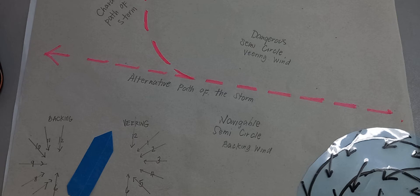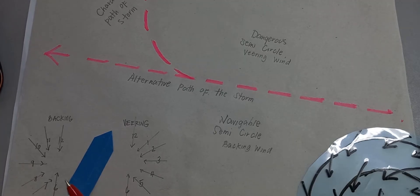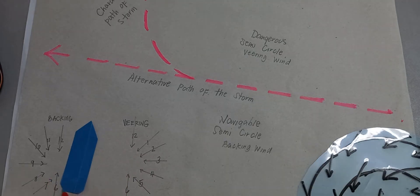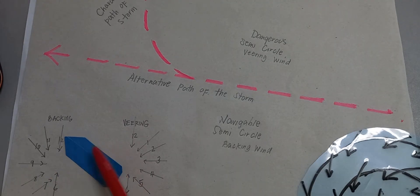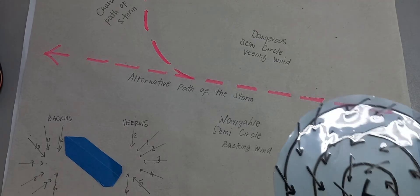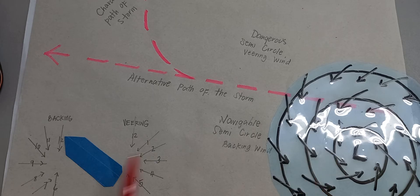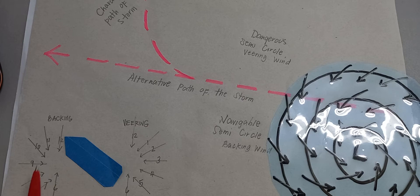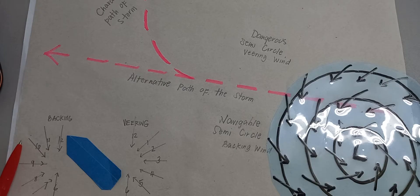How can we understand how the veering wind goes? Looking at the illustration, if you are in the navigable semicircle, the wind is backing — it means the wind that you observe, as the tropical revolving storm approaches, will hit you counterclockwise first: from 12 o'clock, then 11, 10, 9, 8, 7, until 6.